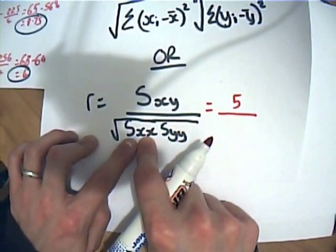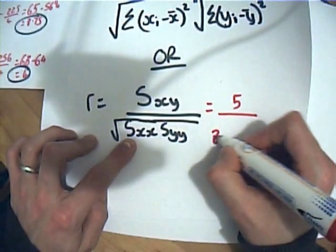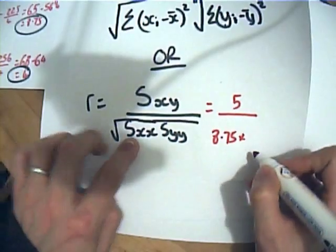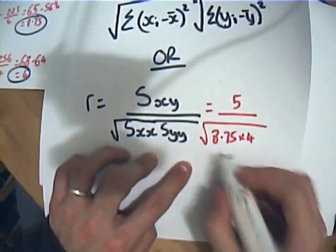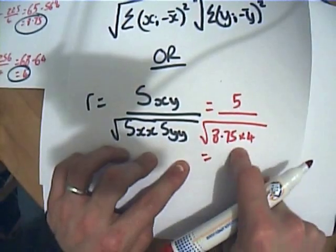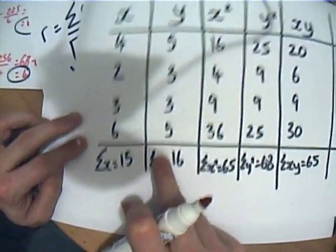So s_xy was 5, s_xx was 8.75, s_yy was 4, and I'm going to square root that. And that will give me my correlation coefficient for this set of data that I was given.